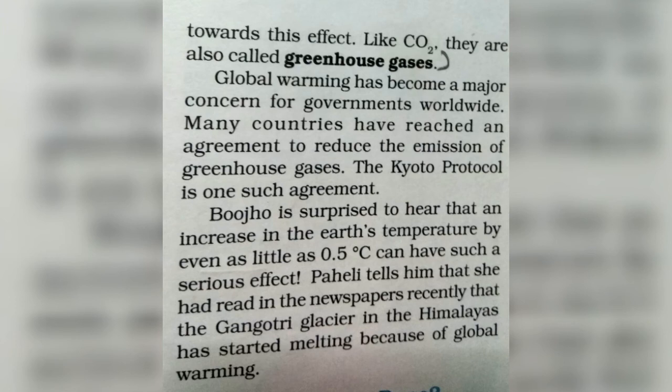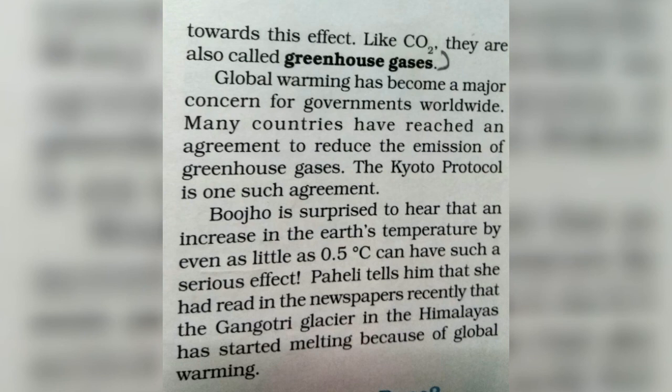It is surprising to hear that an increase in earth's temperature even by 0.5 degrees Celsius can have a serious effect. It has already been in the news that the Gangotri glacier in the Himalayas has started melting due to global warming. Just as an ice cream melts quickly in summer heat, similarly because of rising temperatures, the ice mountains are starting to melt.